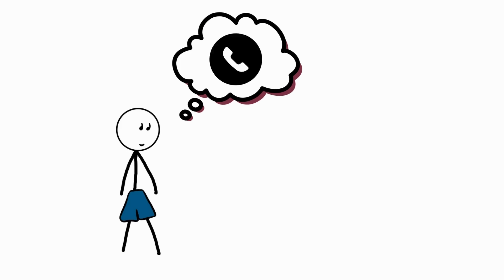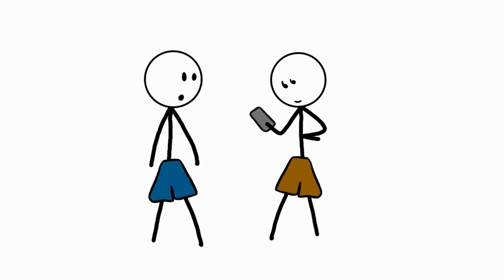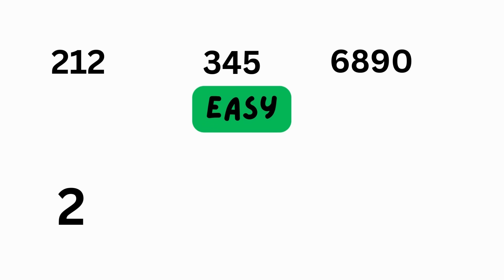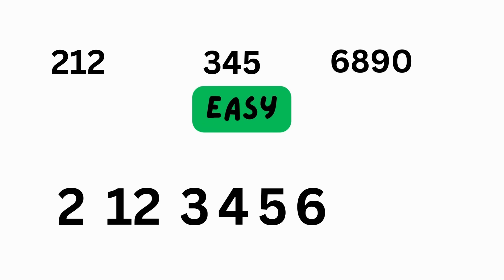Chunking Errors. Think of a phone number you've memorized. Chances are that if you were to say it out loud, you would say the numbers in chunks rather than individually. 212, 345, 6890 is easier to remember than 2, 1, 2, 3, 4, 5, 6, 8, 9, 0.